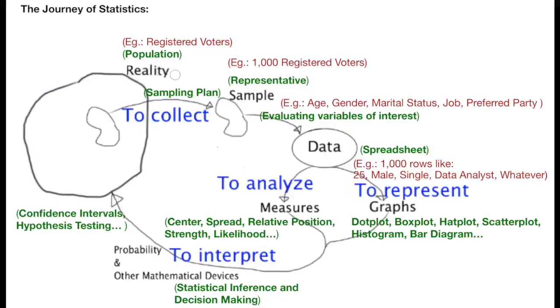The journey of statistics begins and ends in reality. What happens is that our reality of interest, our population, is too big, so we pick a small part of it called sample and we work with it. The main virtue that we want for the sample is being representative of the population. In chapter 1, we'll study sampling plans intended to get a representative sample.